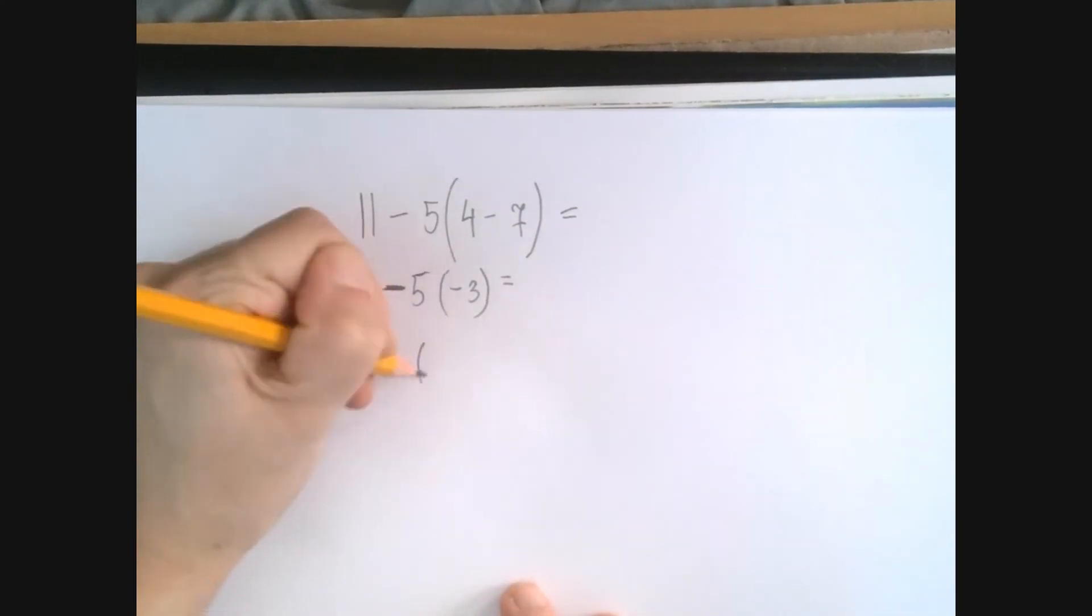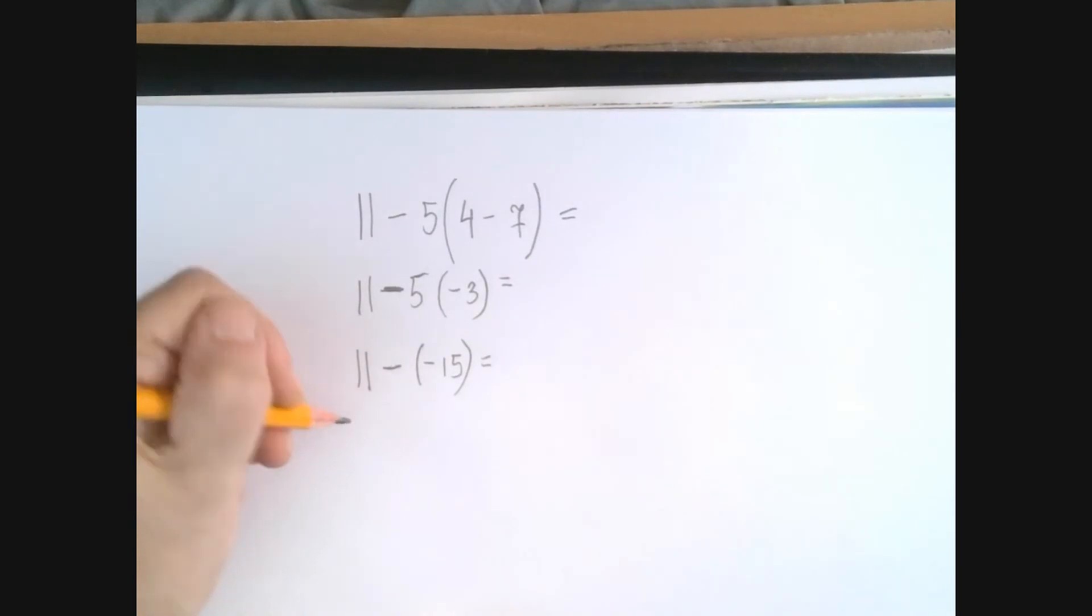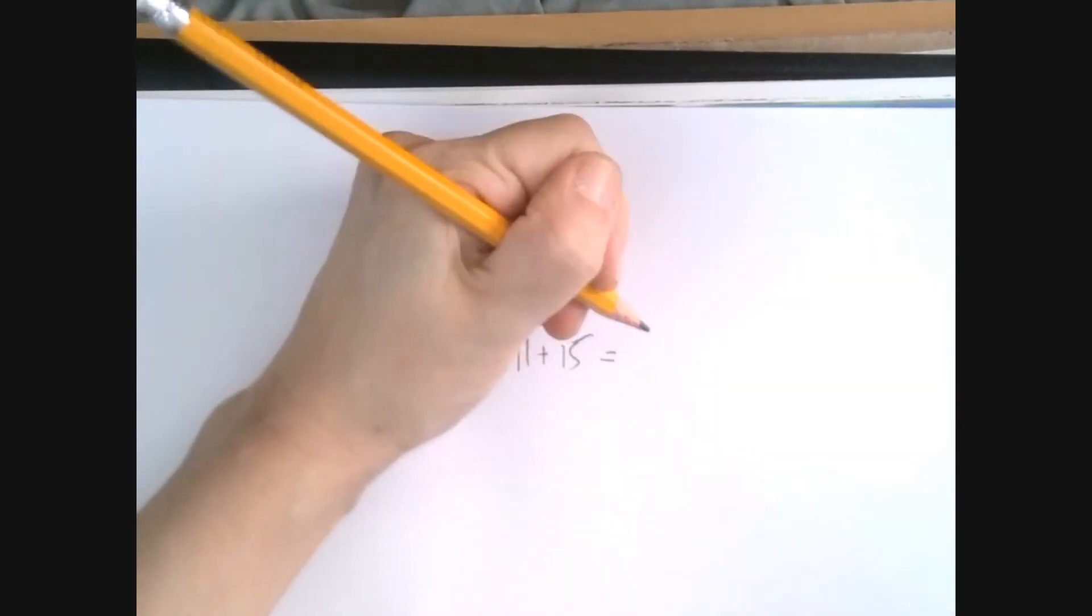5 times negative 3 is what we're subtracting here. 5 times negative 3 is negative 15, and we subtract this at the opposite, so that's the same as 11 plus 15, and that's 26.